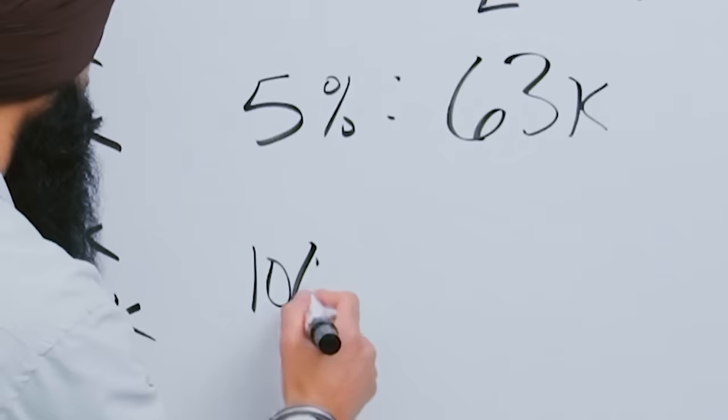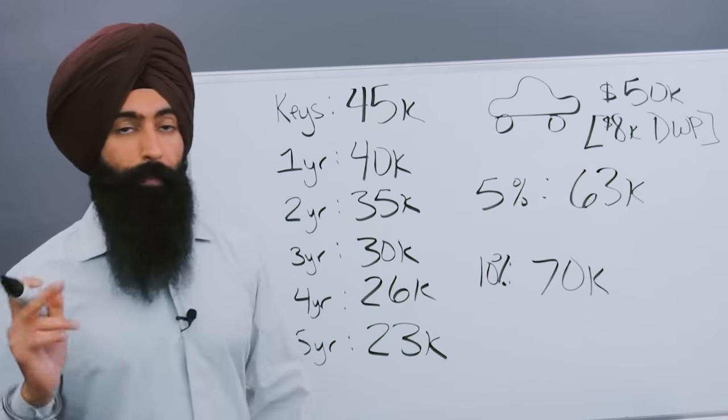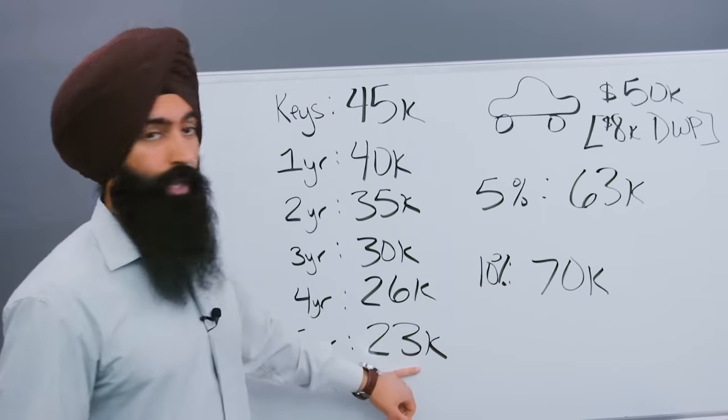And if you get a 10% interest rate, well, now it's going to cost you just around $70,000 to pay off a car that's now worth $23,000.